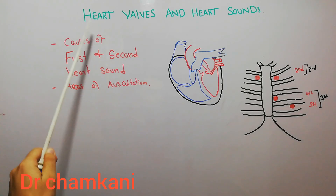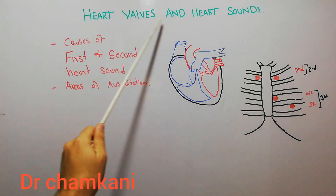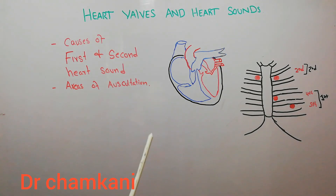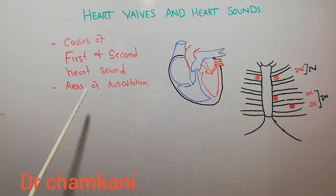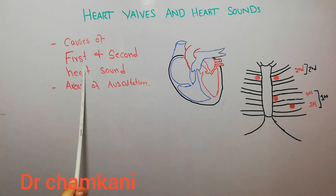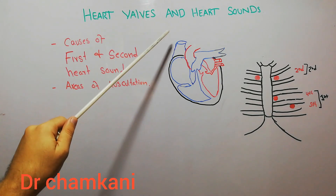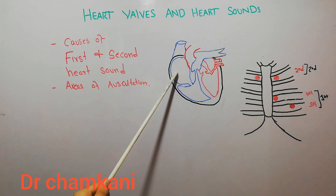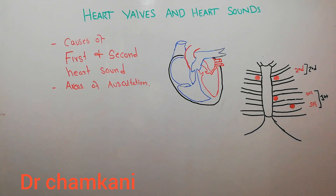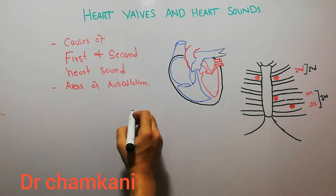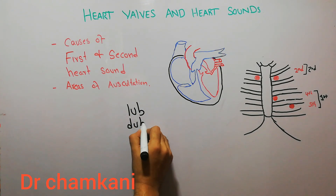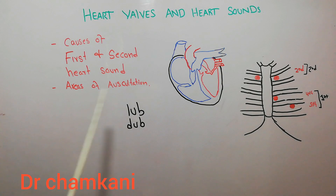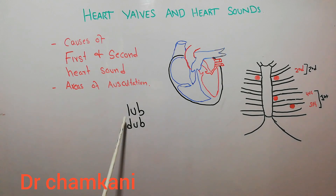Today in this lecture we are going to start our new chapter about the heart valves and the heart sounds. The first topic is basically the causes of first and second heart sounds and the areas for auscultation. When blood is going through the heart, the heart makes sounds like lub-dup, lub-dup — the first heart sound is like 'lub' and the second is like 'dup'.